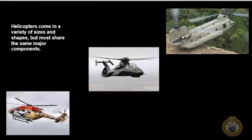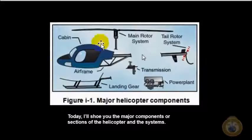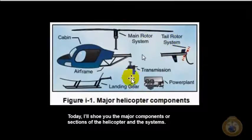Helicopters come in a variety of sizes and shapes, but most share the same major components. Here we have a clip from the actual Federal Aviation Administration on the major helicopter components: the cabin, the main rotor system, the tail rotor system, the transmission, the power plant, and the landing gear.